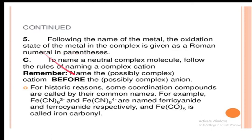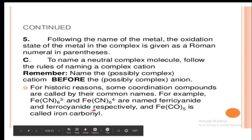To name a neutral complex molecule, follow the rules for naming a complex cation. For historic reasons some coordination compounds are called by their common names — for example, Fe(CN)6³⁻ and Fe(CN)6⁴⁻ are named ferricyanide and ferrocyanide respectively, and Fe(CO)5 is called iron pentacarbonyl.